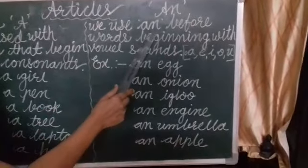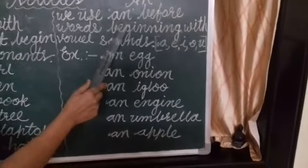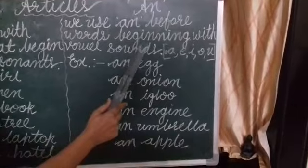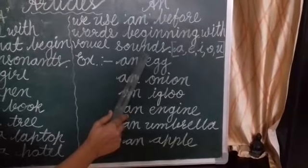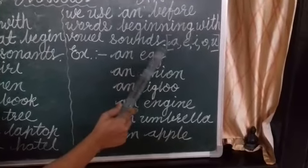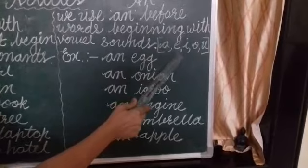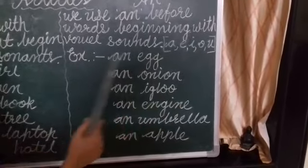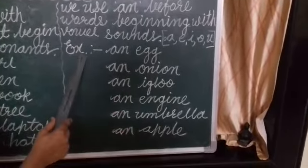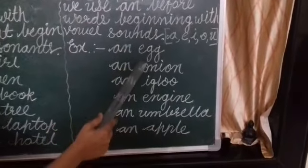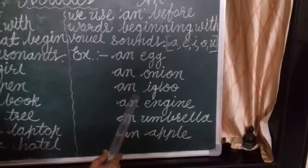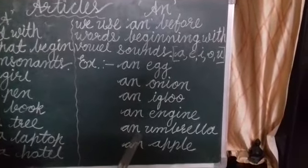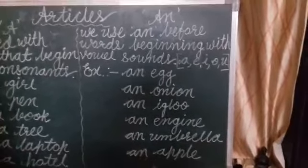We use AN before words beginning with vowel sounds. There are 5 vowels: A, E, I, O, U. For example: an egg, an onion, an igloo, an engine, an umbrella, an apple.